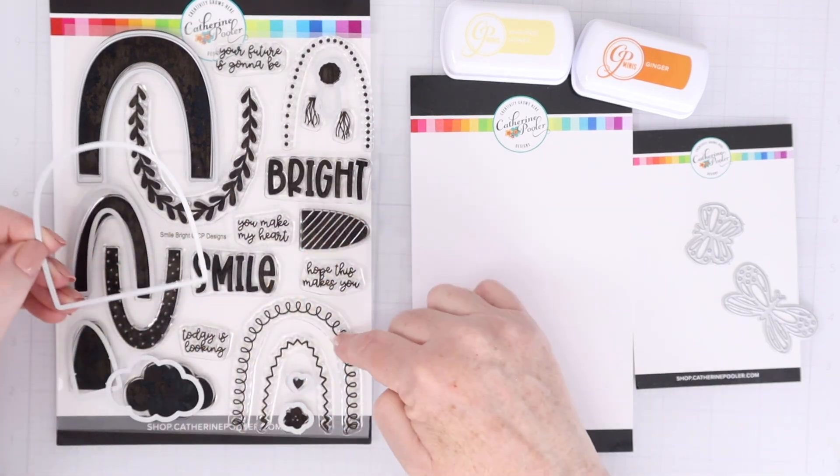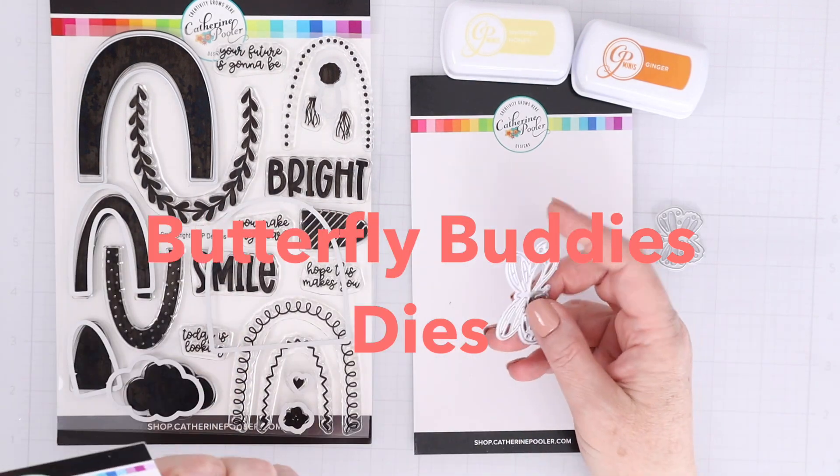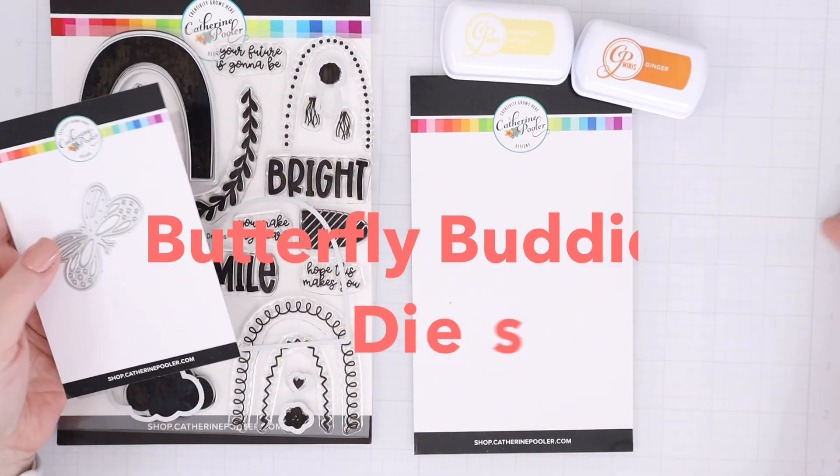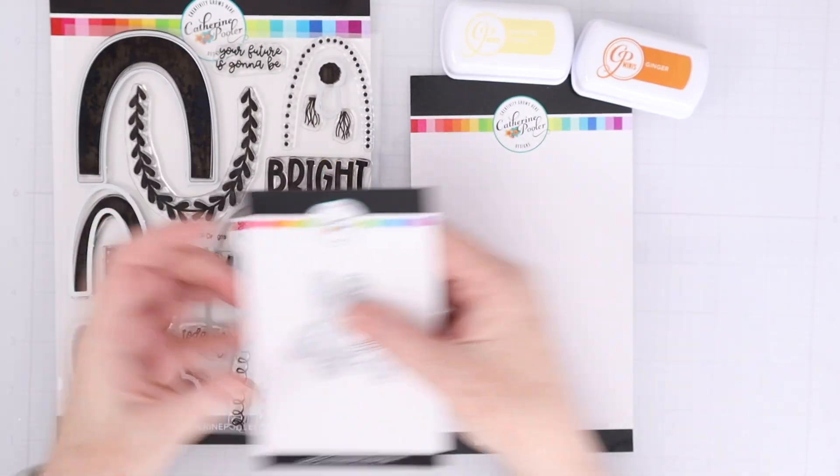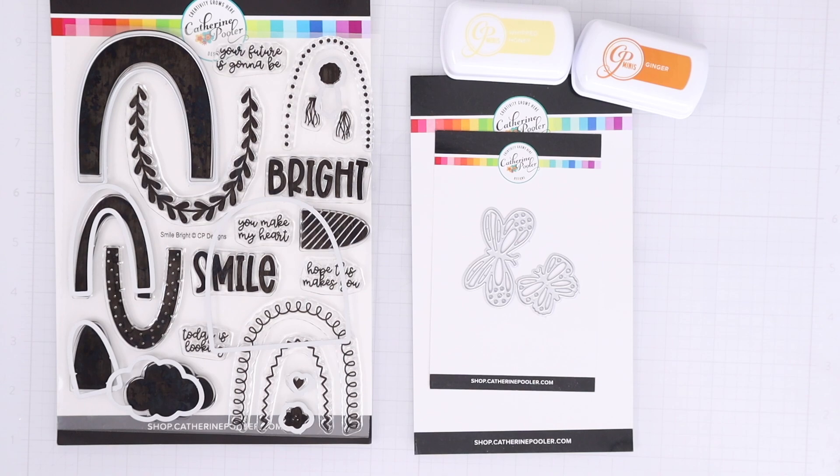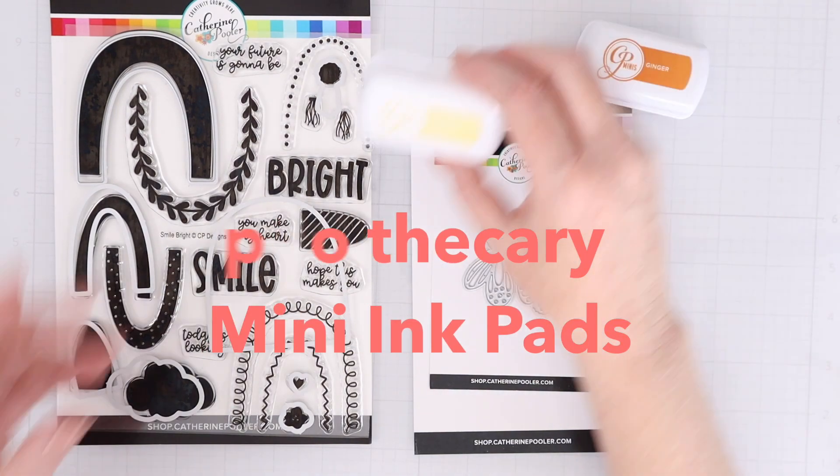There's also the Butterfly Buddies dies. These are two different butterfly dies, two different shapes of butterflies, two different sizes of butterflies. They cut out there around the butterfly and all those details as well.